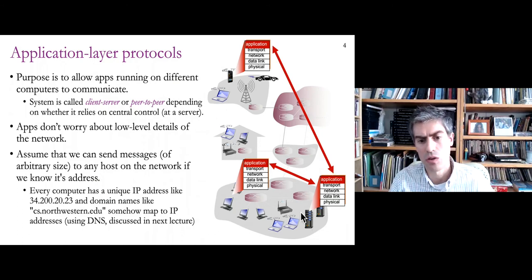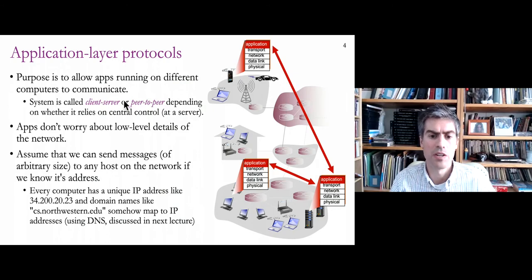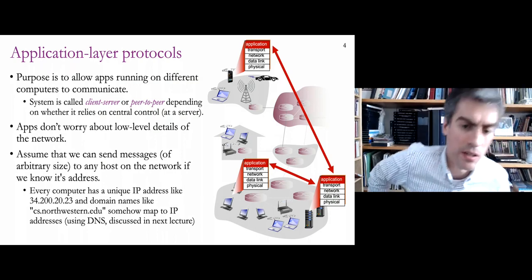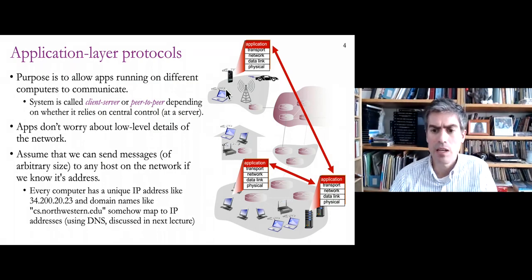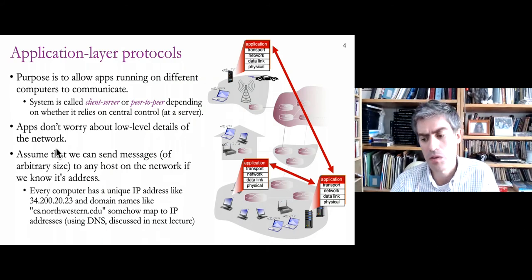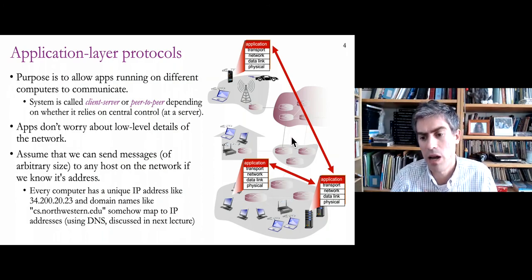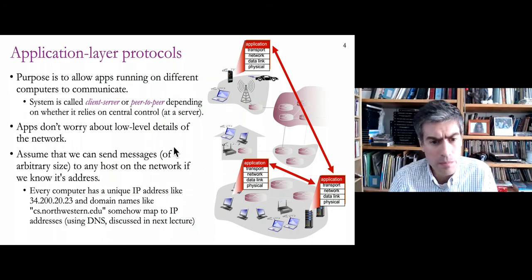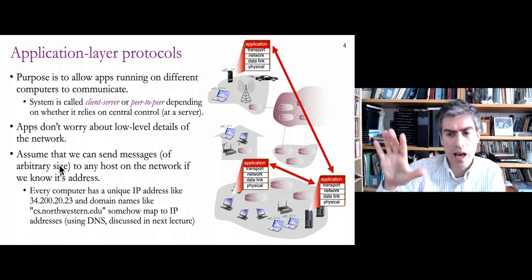Whenever you have central control at a server — a computer in the cloud — we call it a client-server model. When computers are more equal participants, we call those peer-to-peer systems. Regardless of the type, application developers don't want to worry about low-level details like packets being dropped or many hops between machines. We end up using TCP sockets that hide all those details. What applications want is a way to send messages of arbitrary size to anyone in the world.